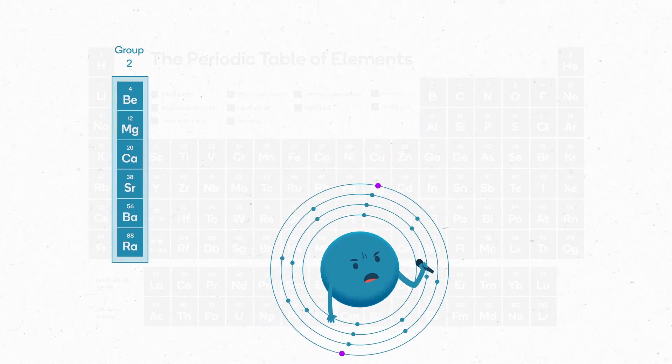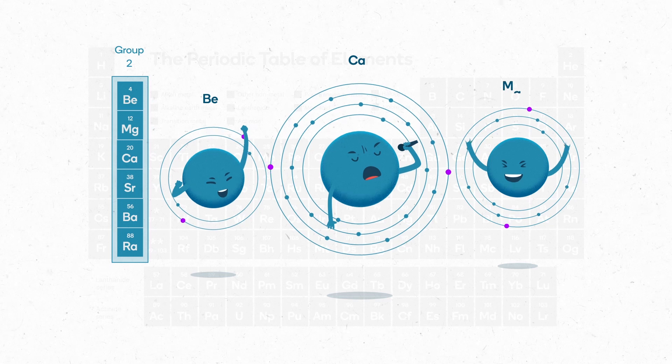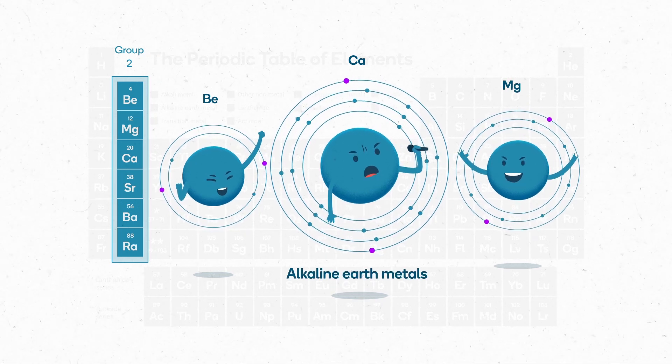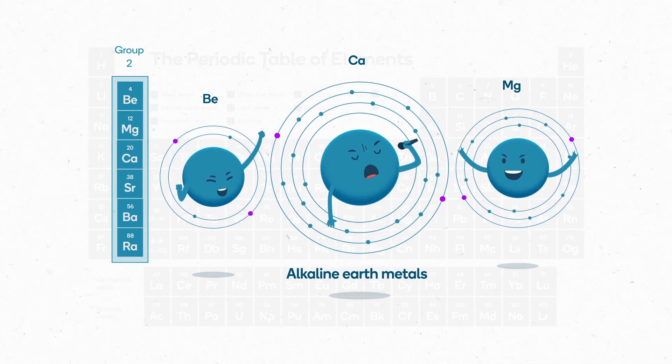The same trends of atomic size and reactivity also apply to group 2, the alkaline earth metals, although they are slightly less reactive than the group 1 elements.